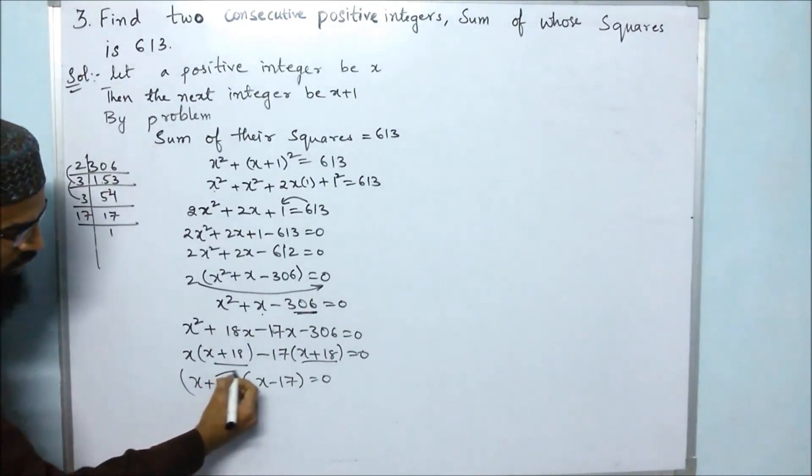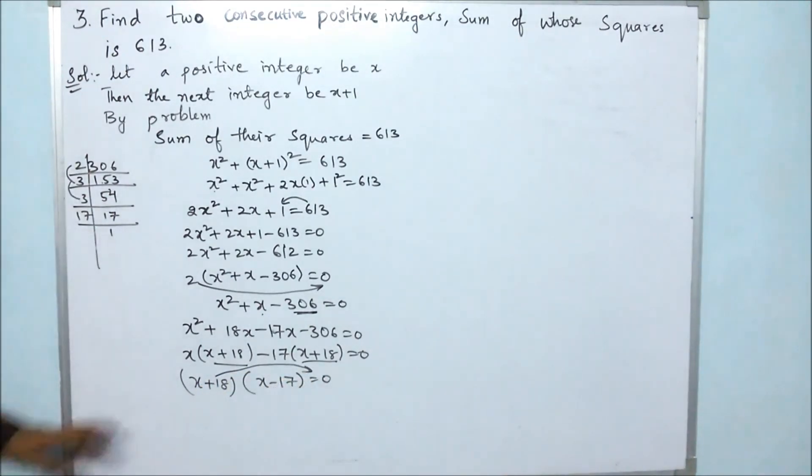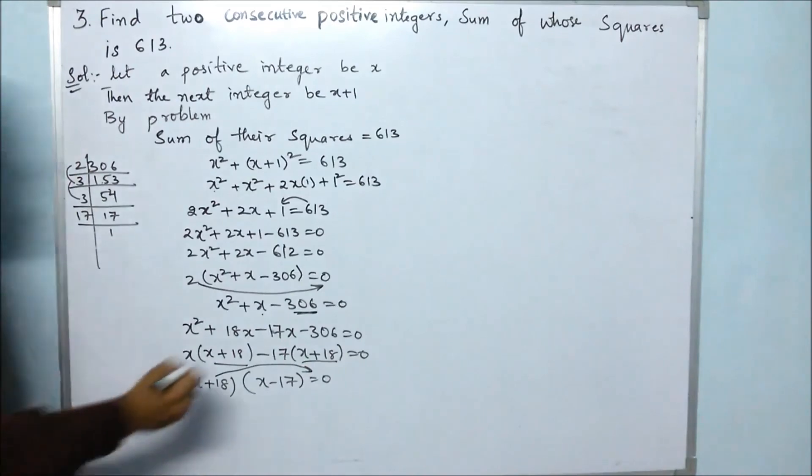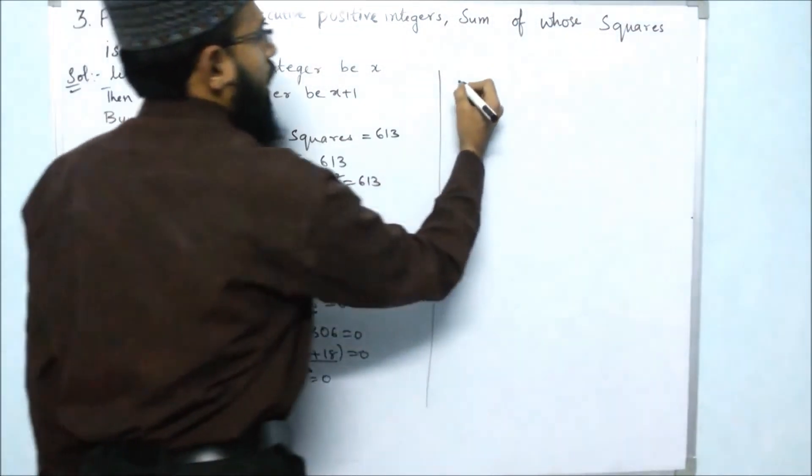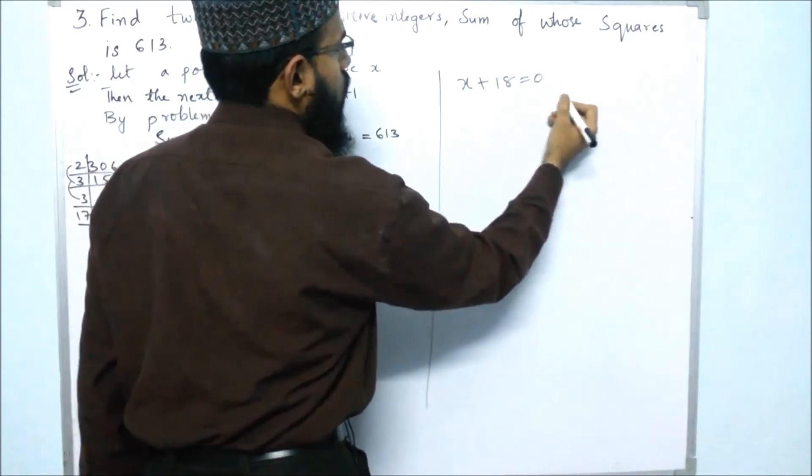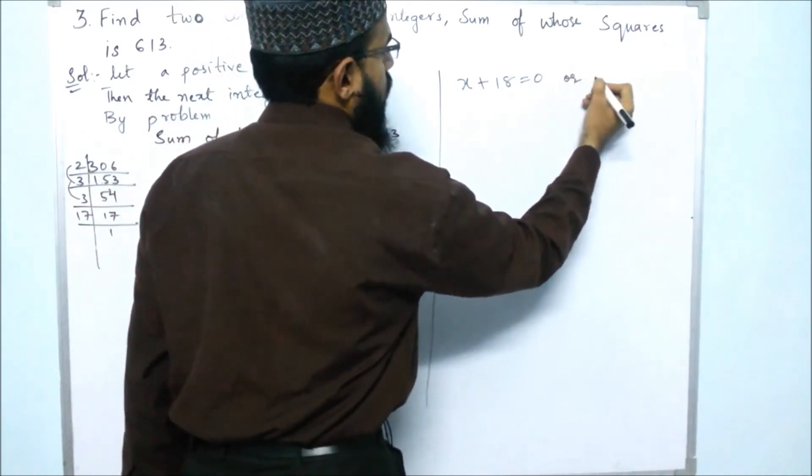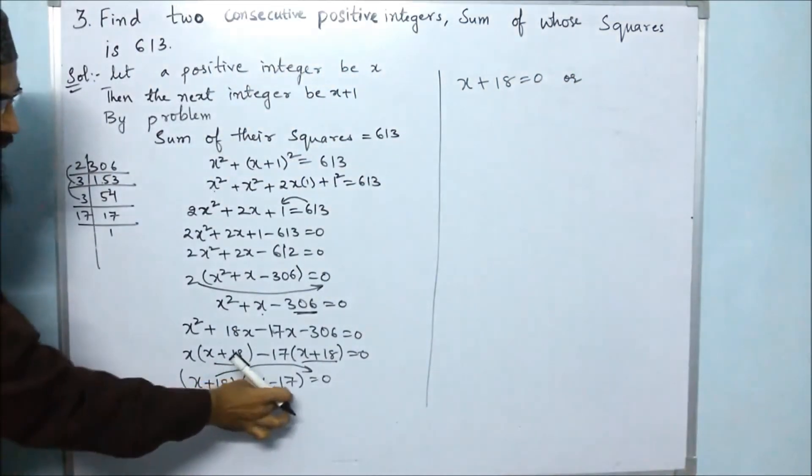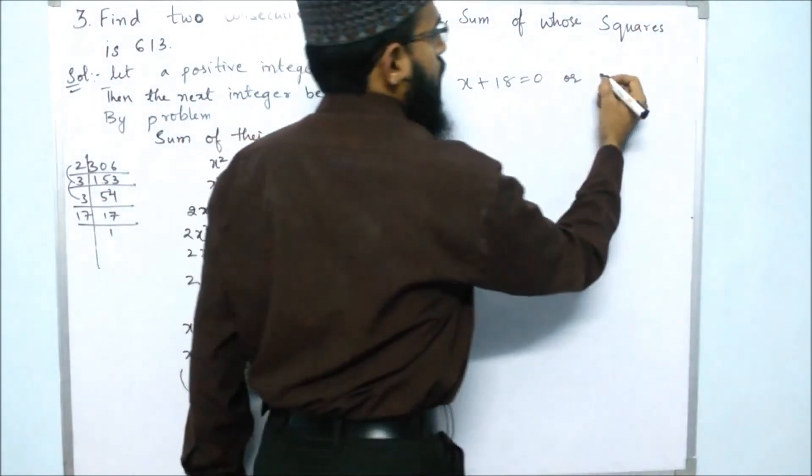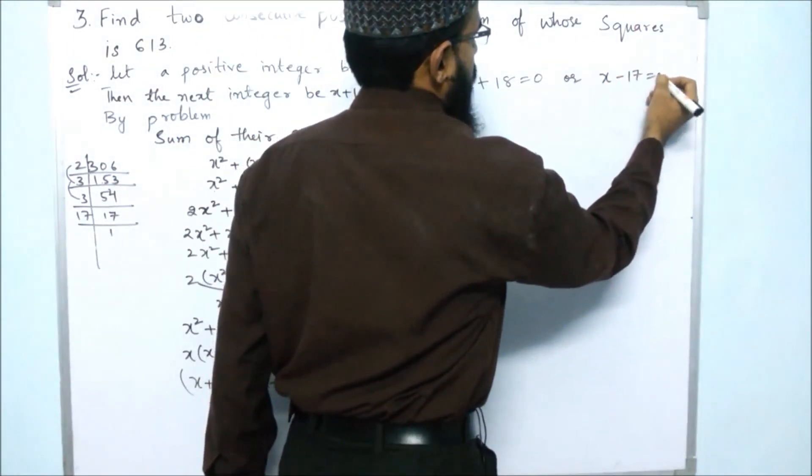(x + 18)(x - 17) = 0. Once we will take the 0 along with x + 18, so x + 18 = 0, and we will take x - 17 = 0.